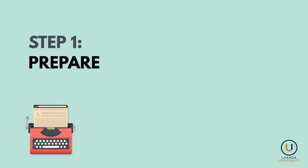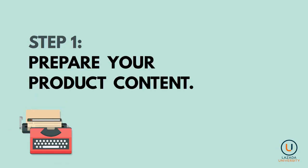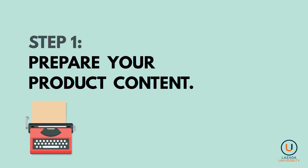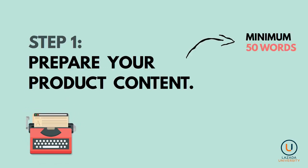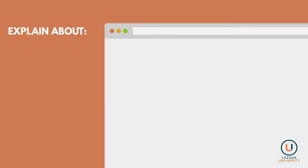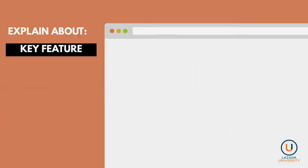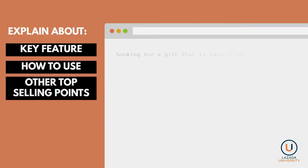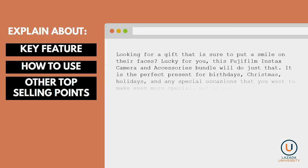Step 1: Prepare your product content. A good product description should consist of informative product details in a form of minimum 50 words and minimum 1 image. You can explain about key features of the product, such as specification, how to use the product, or other top selling points like perfect occasions to wear it.